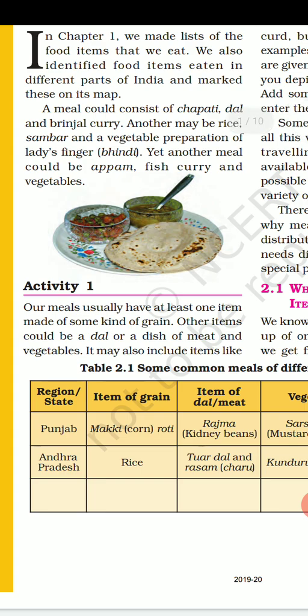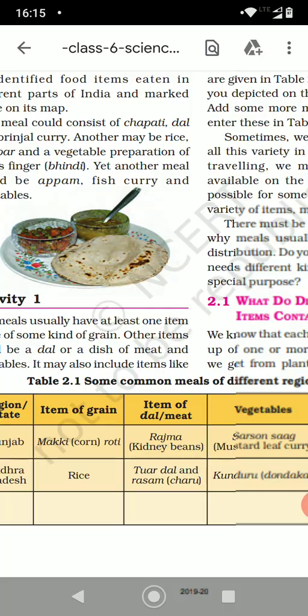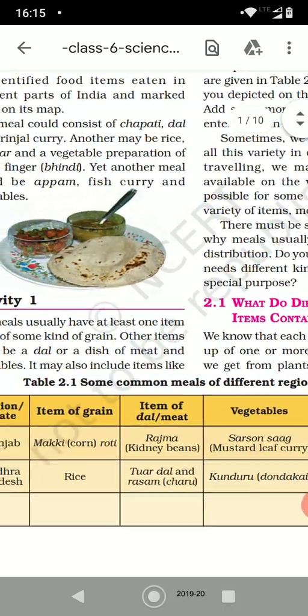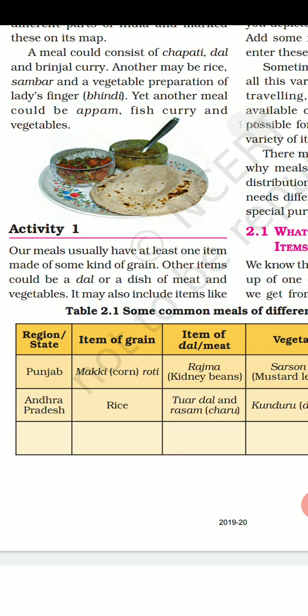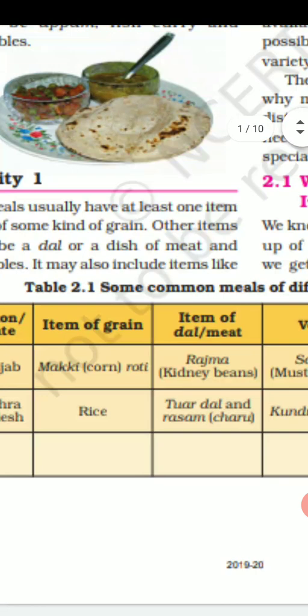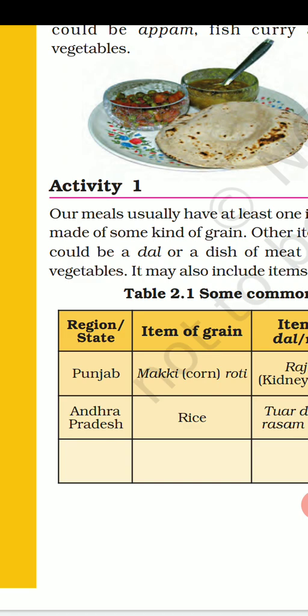Check table 2.1. In table 2.1, some common meals of different regions and states are listed. You have to draw the whole table, writing region and state. You will have to write at least 5 regions and 5 states. Two are already mentioned — Punjab and Andhra Pradesh — and now you will write 3 more.